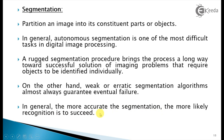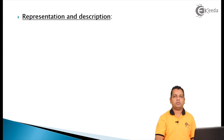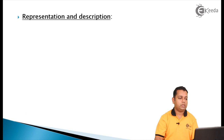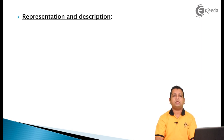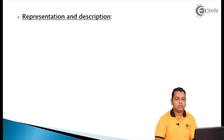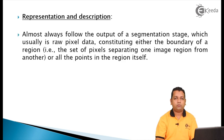In general, the more accurate the segmentation, the more likely recognition is to succeed. The last fundamental step is object recognition, which depends on the earlier fundamental steps — especially image segmentation. After segmentation, the next step is representation and description: the objects output by segmentation must have their representations and descriptions addressed.